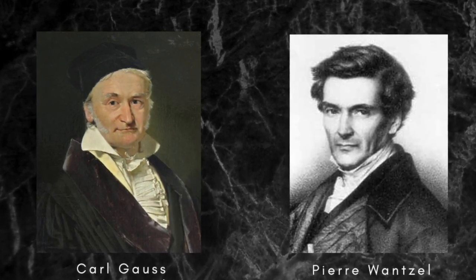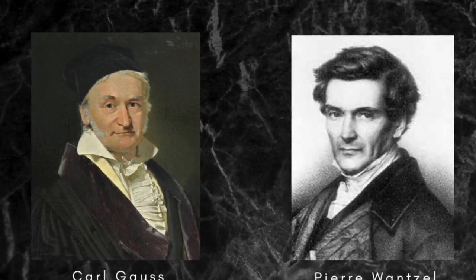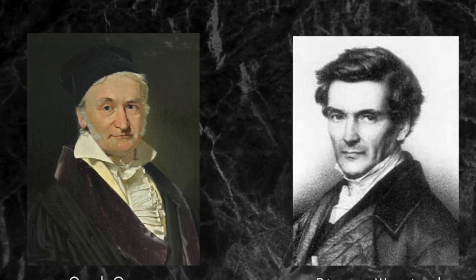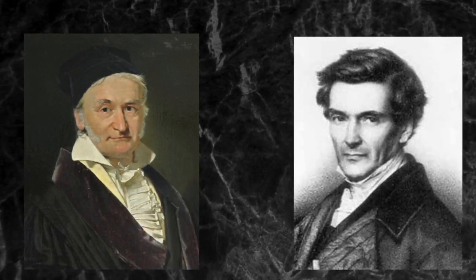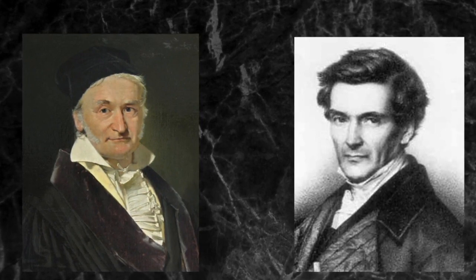His great claim to fame came in 1837, when he proved, once and for all, that trisecting the angle and duplicating the cube were impossible, and that Gauss's method could construct everything it was possible to construct using a straight edge and compass alone. There was absolutely no hope of any further breakthroughs on these matters.